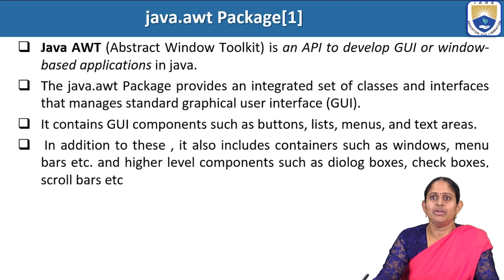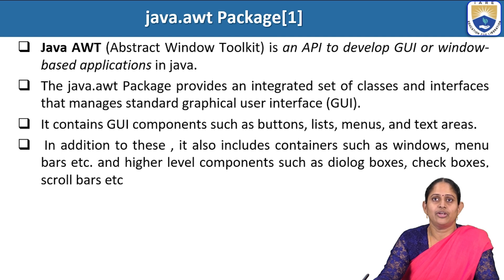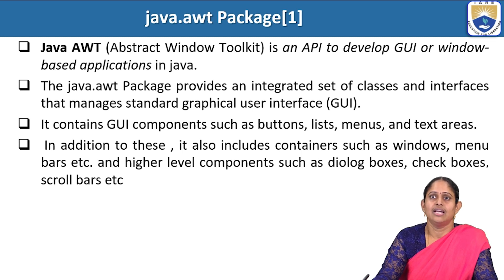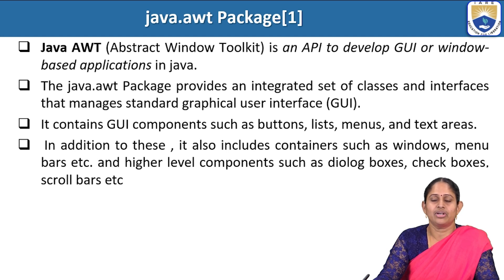AWT, or the Abstract Window Toolkit, is an API used for graphical user interface or to provide window-based applications in Java. They provide a set of classes and interfaces which can be used to manage these graphical user interfaces. The Abstract Window Toolkit contains components such as buttons, menus, lists, etc. They also contain containers which hold these smaller components such as windows, menu bars and dialog boxes.